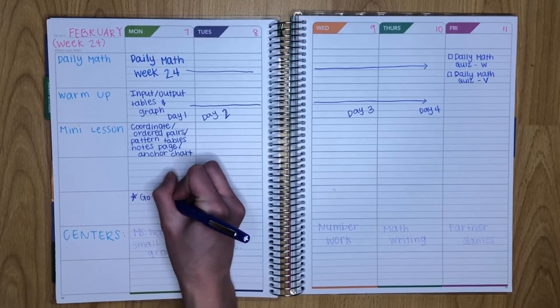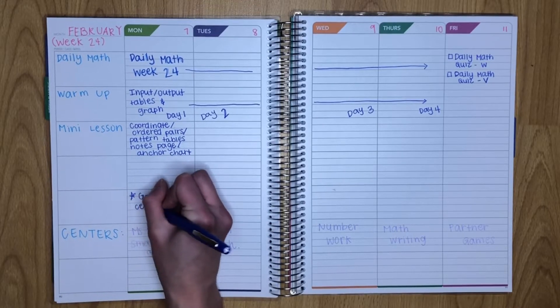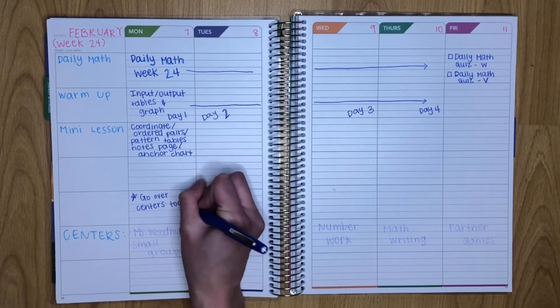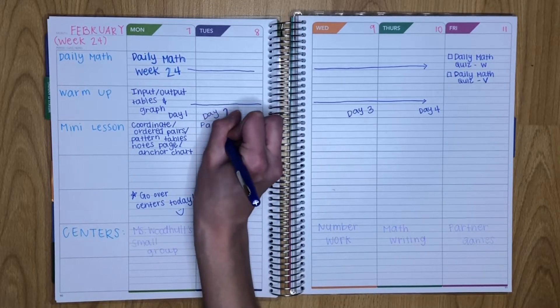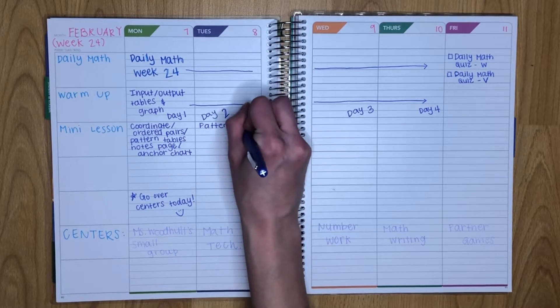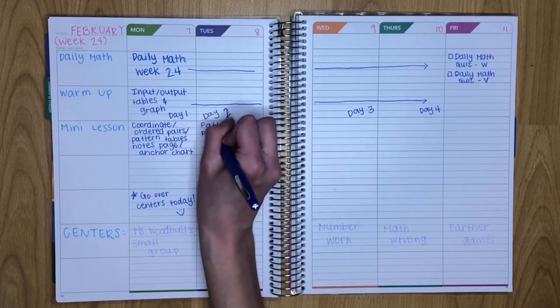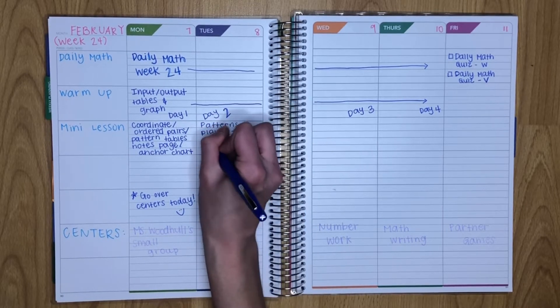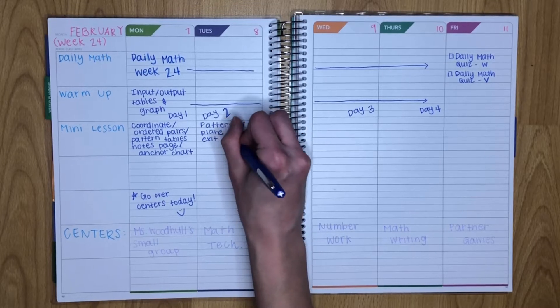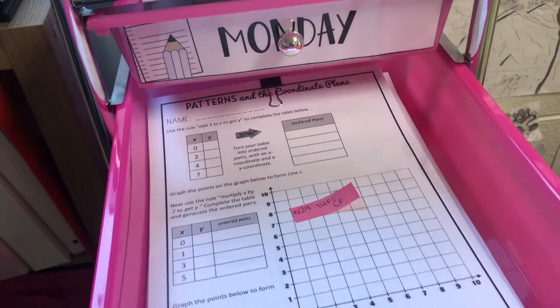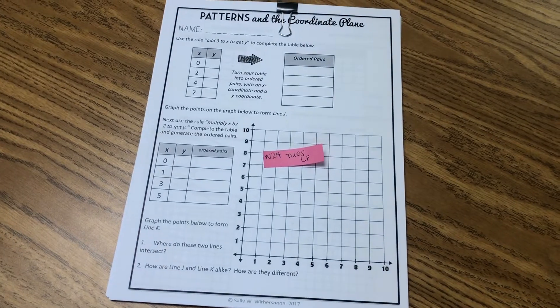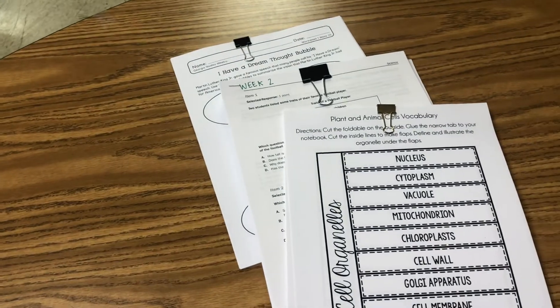Always make sure there's a little extra time on Monday to go over the centers for the week so the students are clear on what they're doing in each center. And on Tuesday, our mini-lesson will be a pattern and plane plus exit ticket notes page. So organizing that into our Tuesday drawer, there is our notes page, and there's a little glimpse of our science and social studies plans for the day.